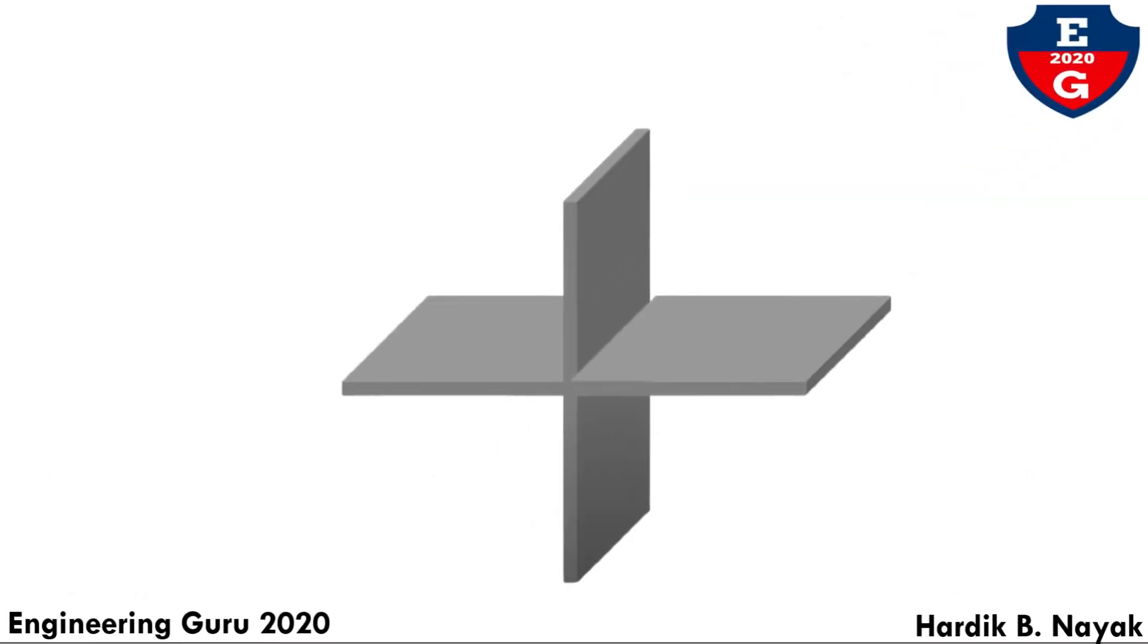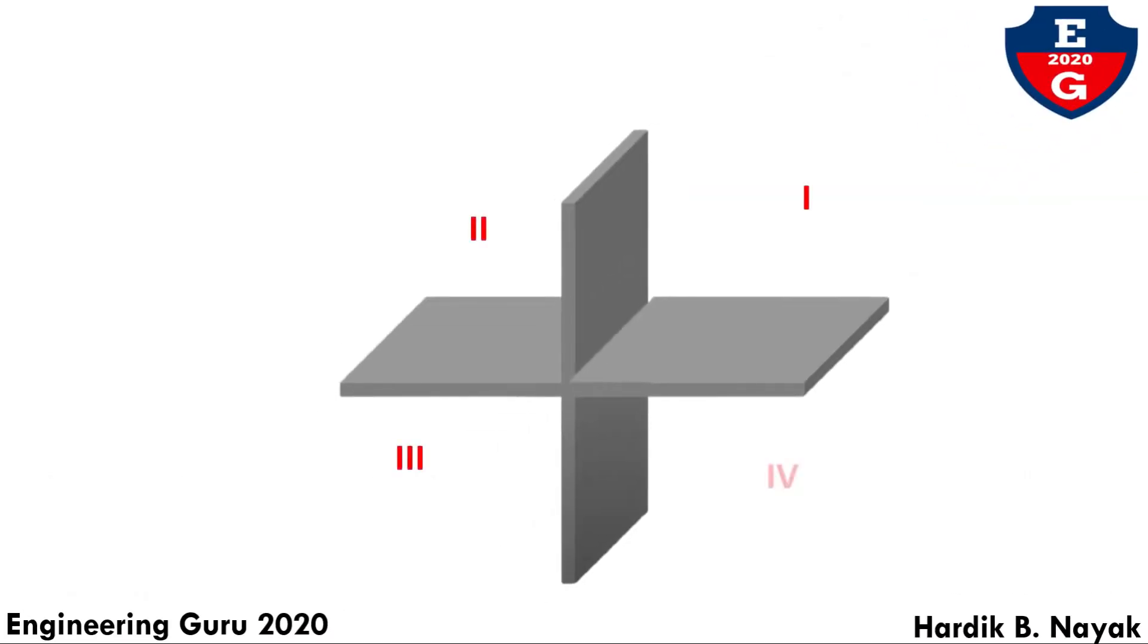We have horizontal plane, that is HP, and vertical plane, that is VP. We also have four quadrants: first quadrant, second quadrant, third quadrant, and fourth quadrant.